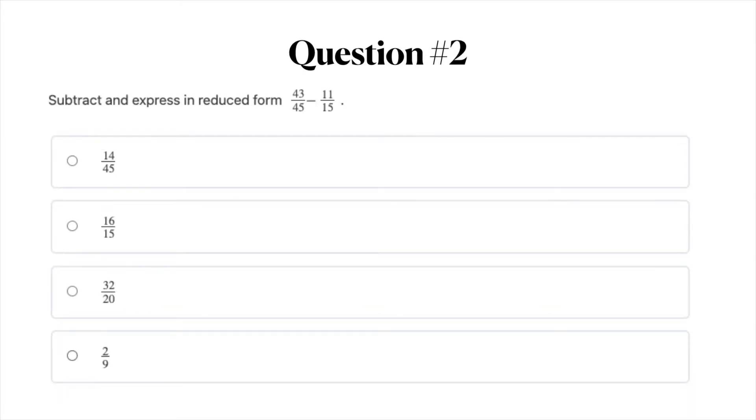Question number two. Subtract and express in reduced form 43 over 45 minus 11 over 15. Your answer options are A, 14 over 45, B, 16 over 15, C, 32 over 20, and D, 2 over 9. You can pause the video here to take some time to answer this question and when you're ready move on to question number three.